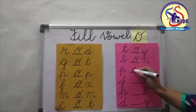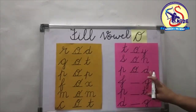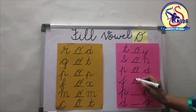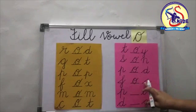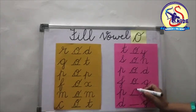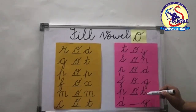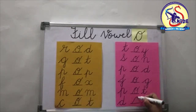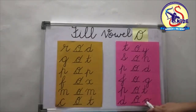Now see the next: P blank D. Again we will put O in the blank and we will get the word P-O-D, pod. Now see the next: J blank G. Again we will put O in the blank and we will get the word J-O-G, jog. Now P blank T — P-O-T, pot. Now see the next: D blank G — D-O-G, dog.